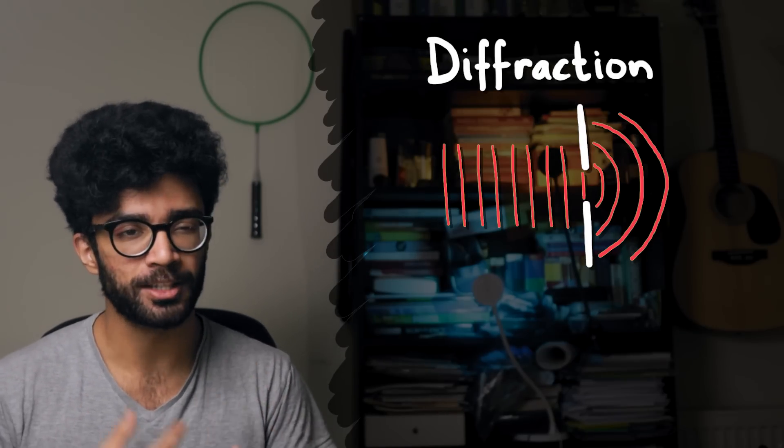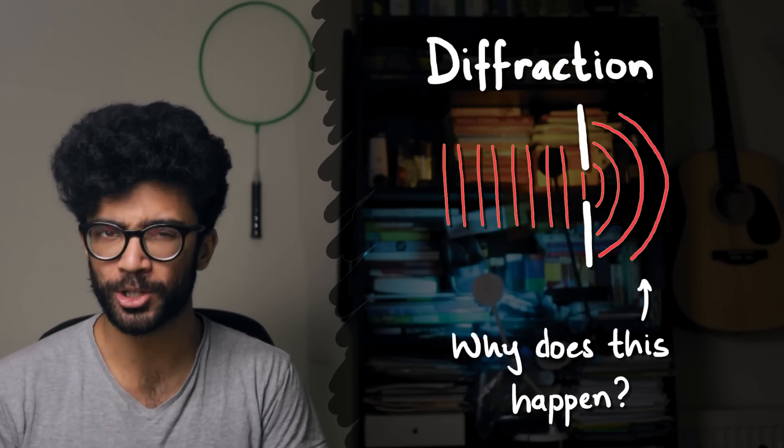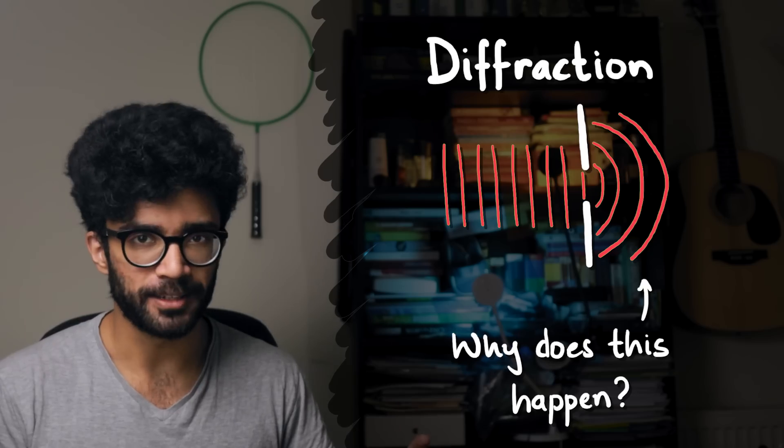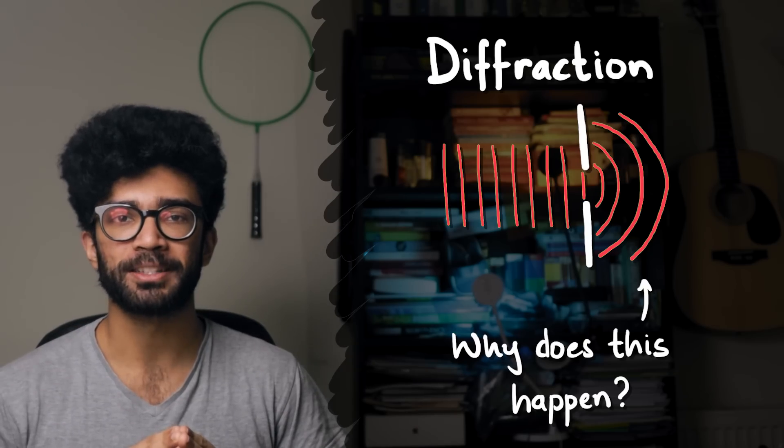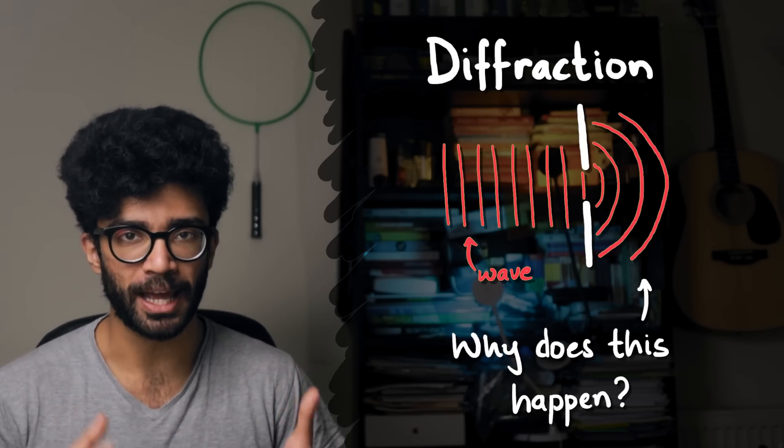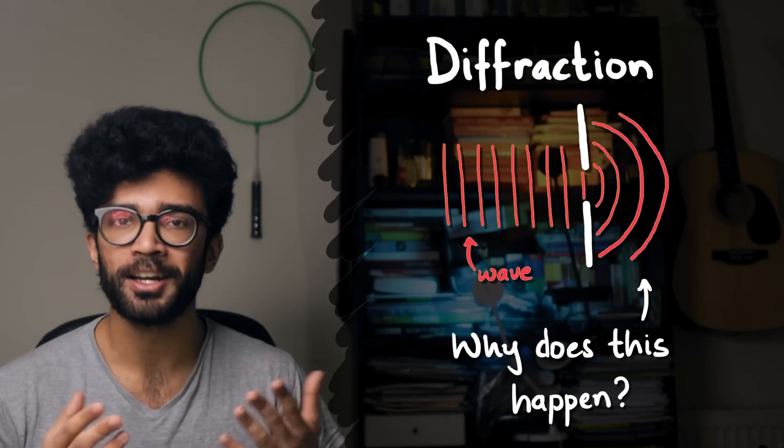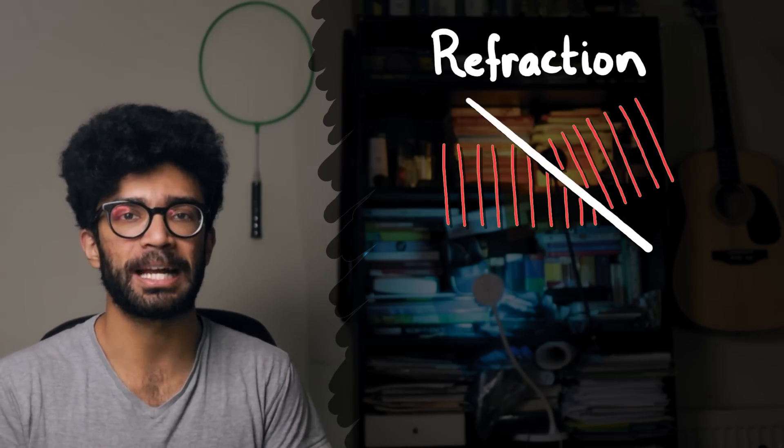Specifically, I want to talk about why diffraction happens and give you a way of visualizing why it might be happening. We're talking about the diffraction of waves. Diffraction is a behavior displayed by waves, just like reflection or refraction. Today I want to spend a little time talking about what diffraction actually is, as well as going into a more advanced concept of why it might be happening. You don't need to be a physics student at university level to understand this.